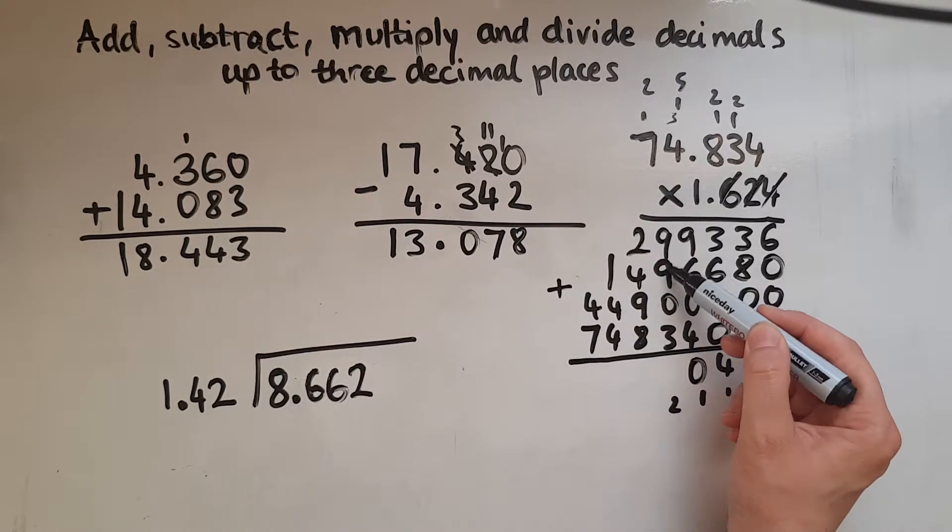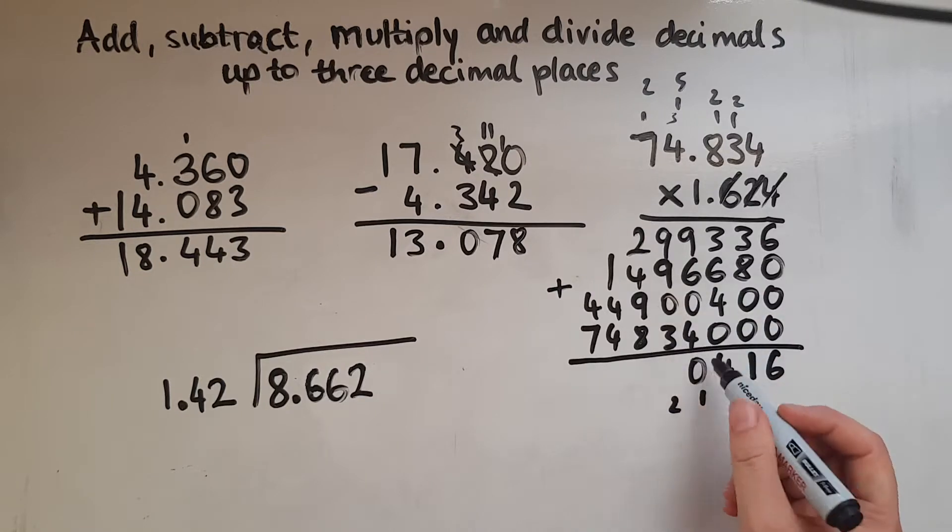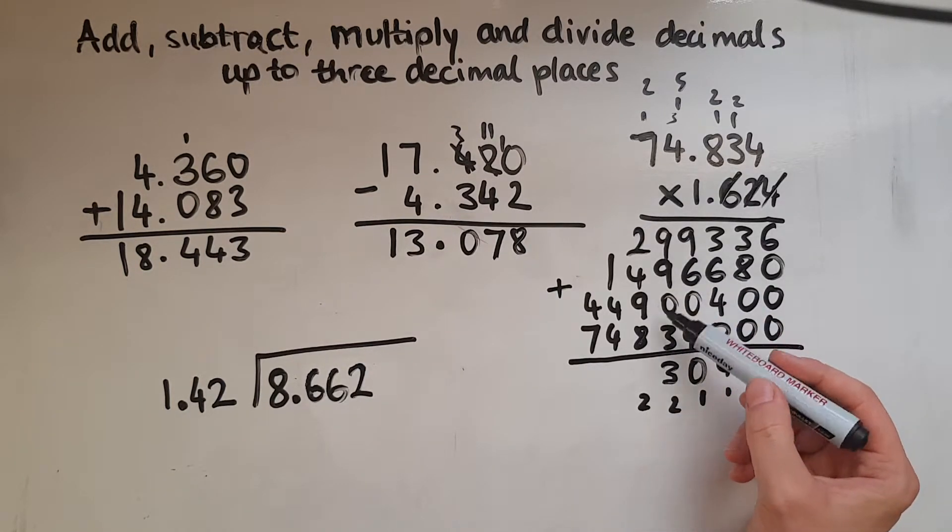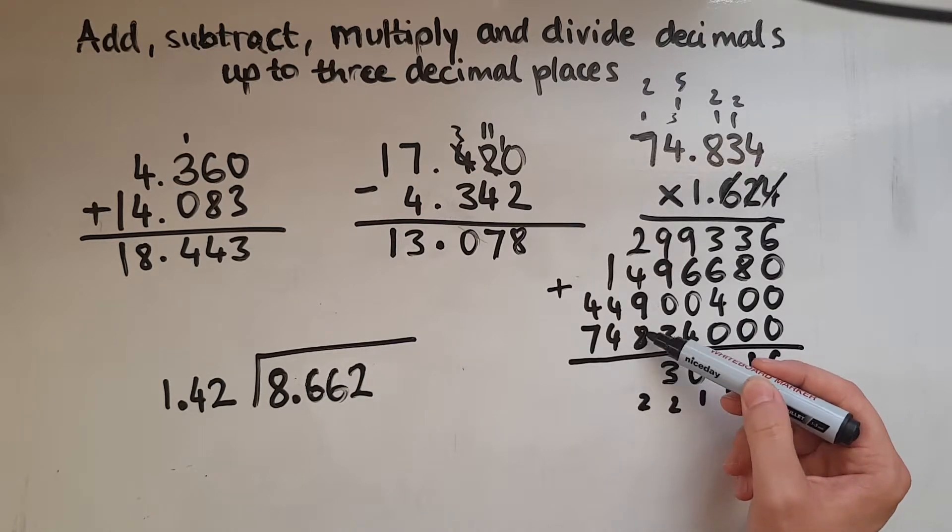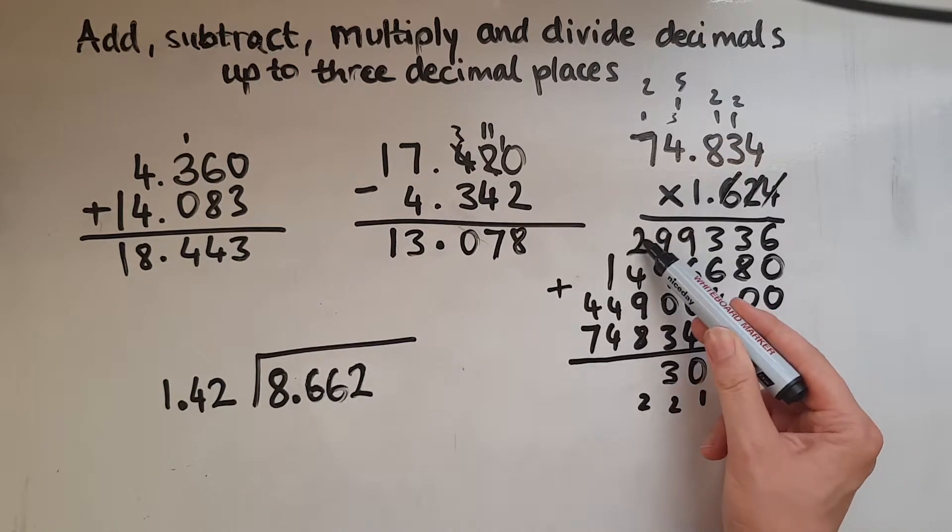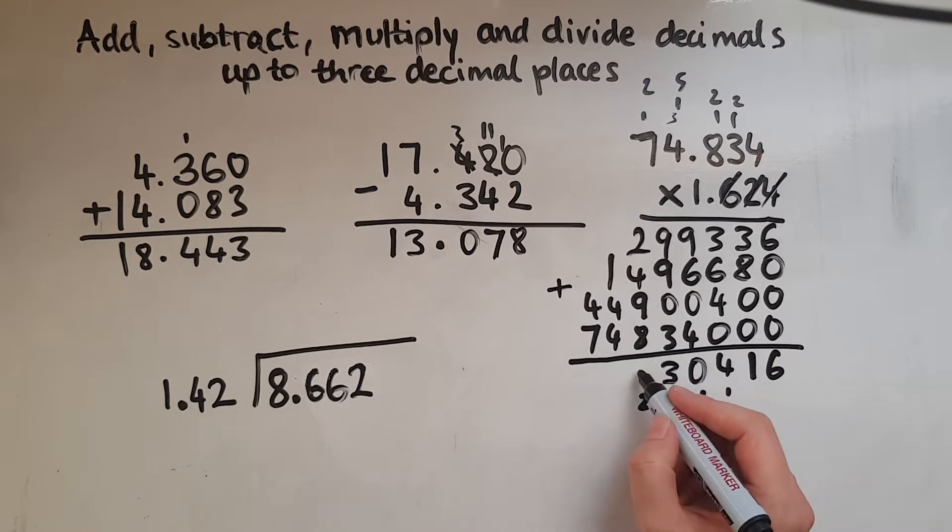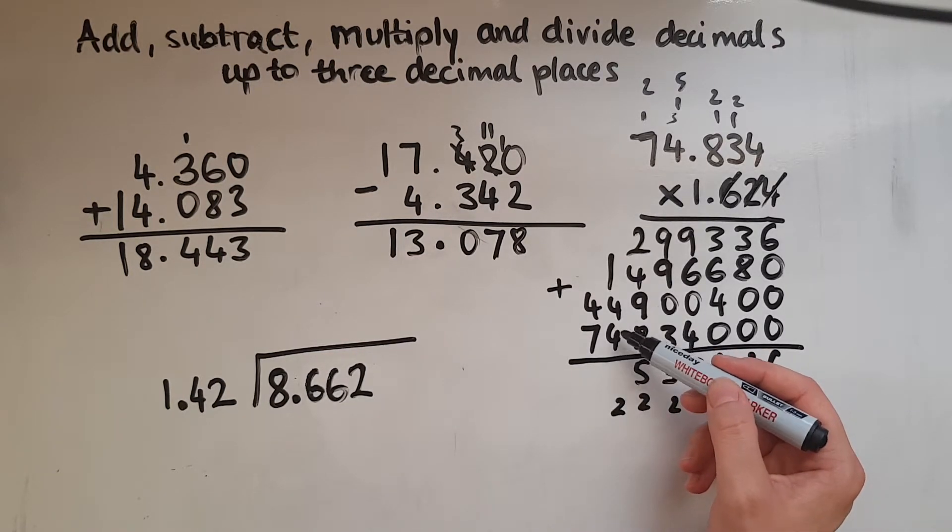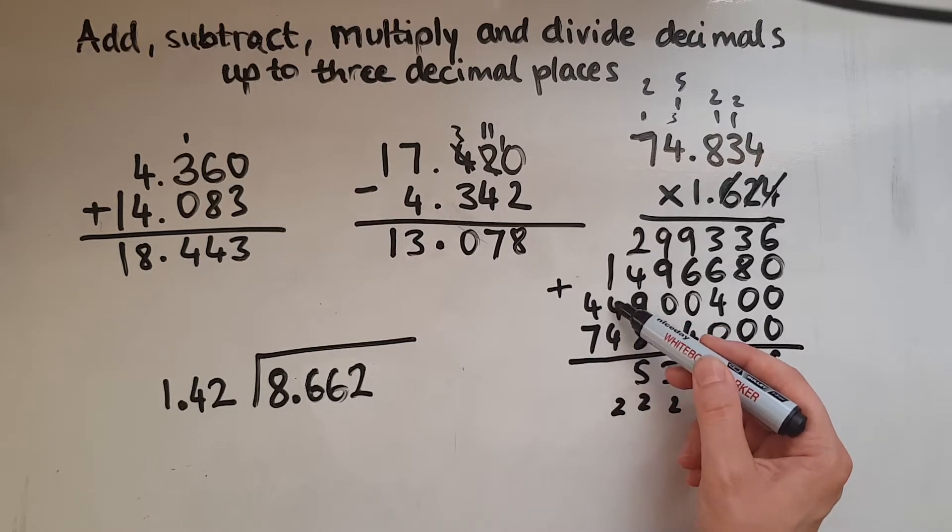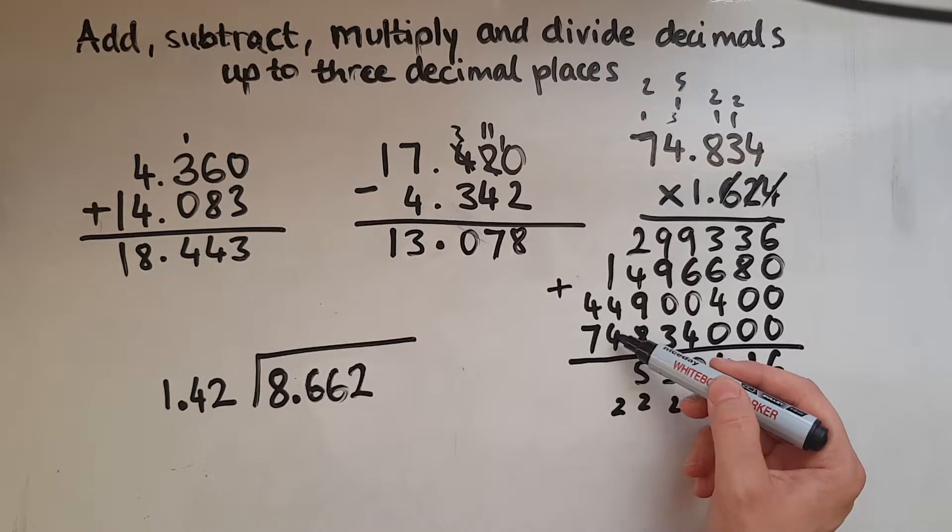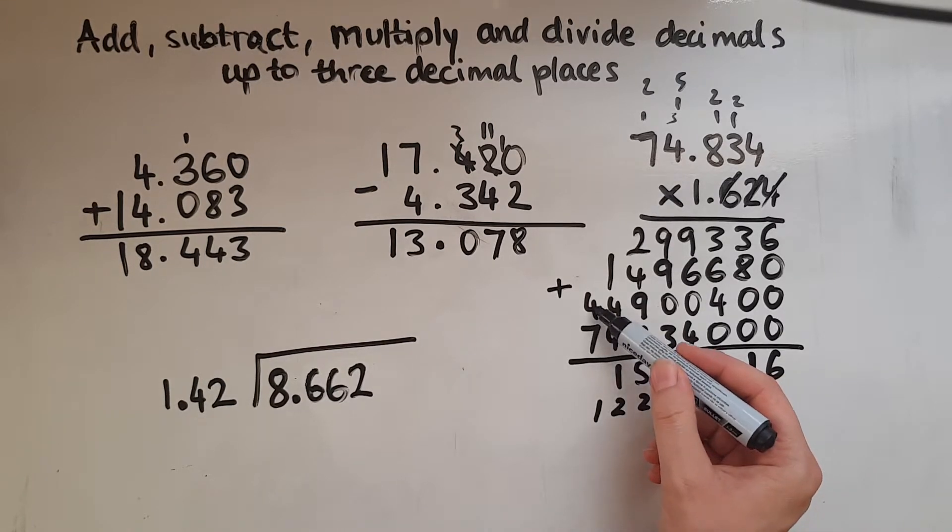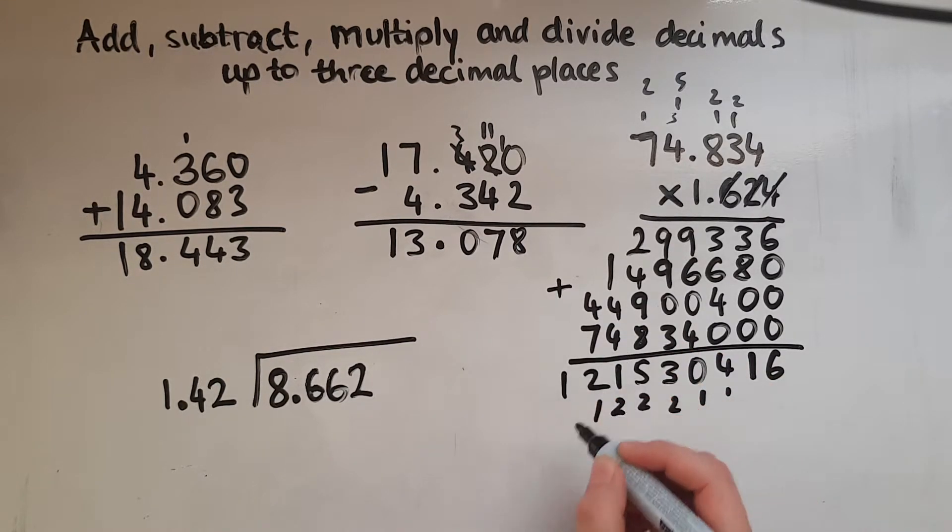Now add these. There's 20, 23. So 2 carried over. So 8 and 2 is 10, 19, 21, 25. So we've got 5, 9, 11. 7 and 4 is 11, and the 1 is 12. So we've got this number now.